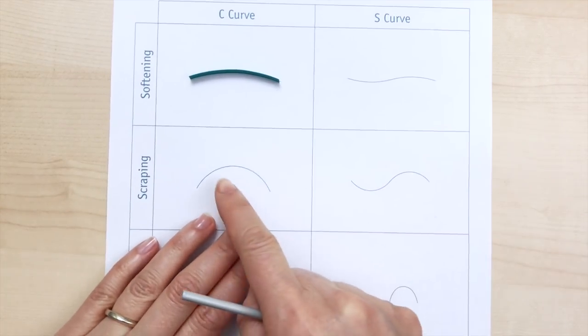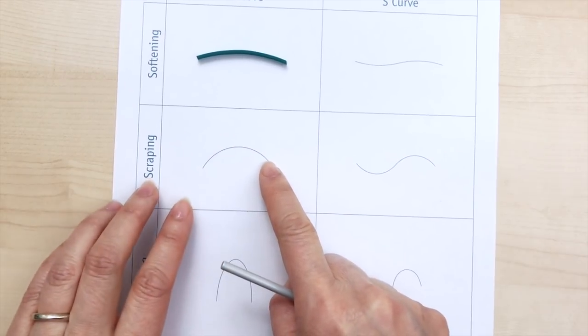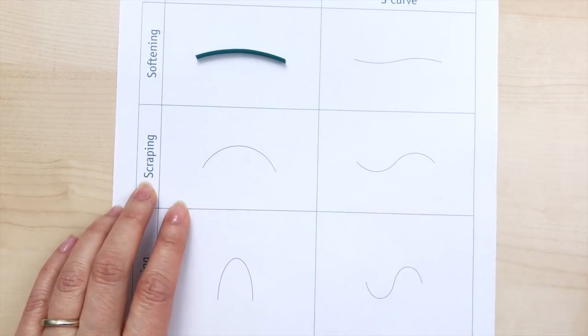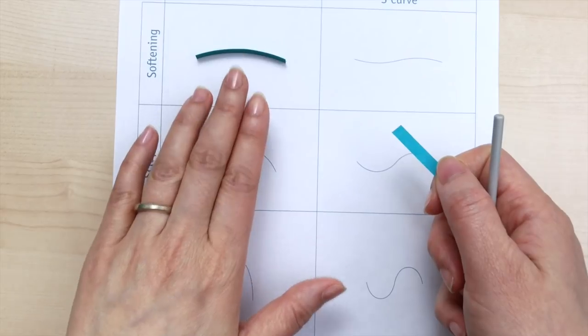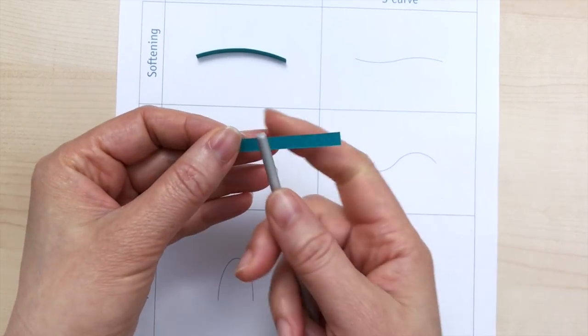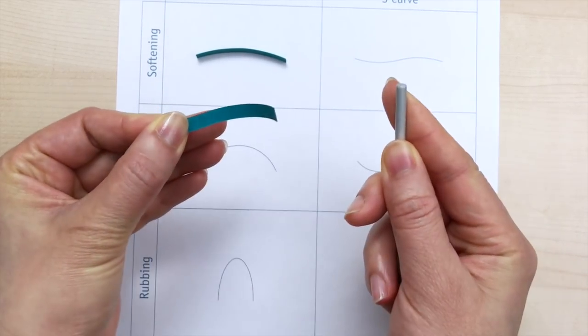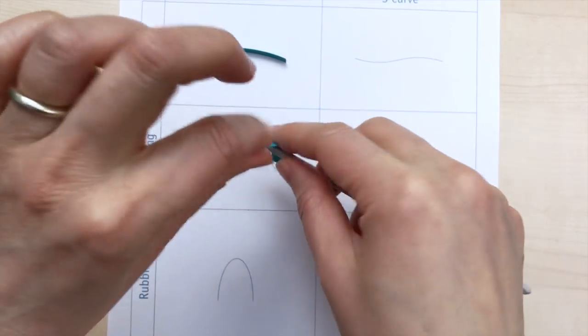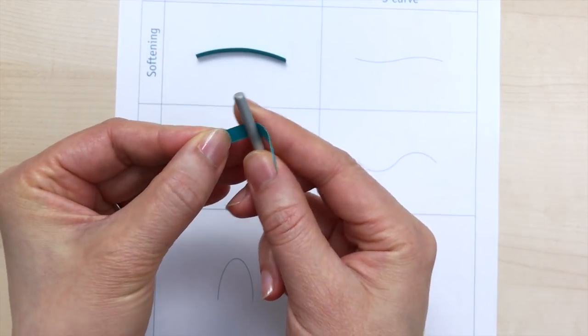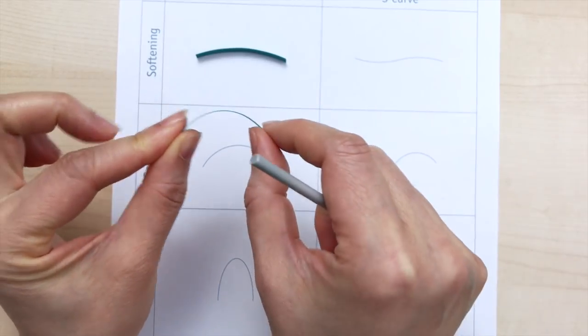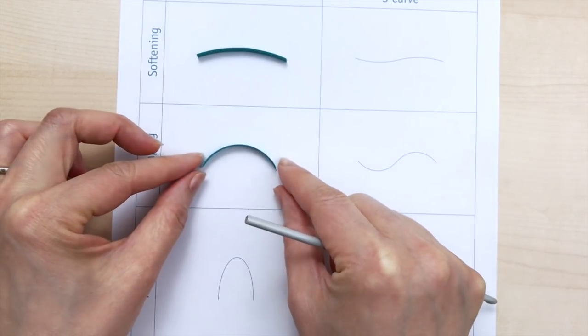So now the next one is still the C curve, and we're going to do what I call scraping. And scraping is the same as softening, just a little bit harder. So I'm going to apply a bit more friction as I come across that strip. Turn it around, and apply the same amount of friction to achieve that curve.